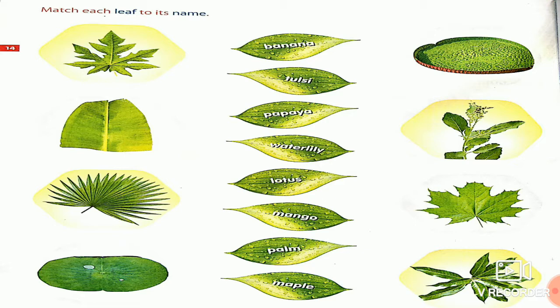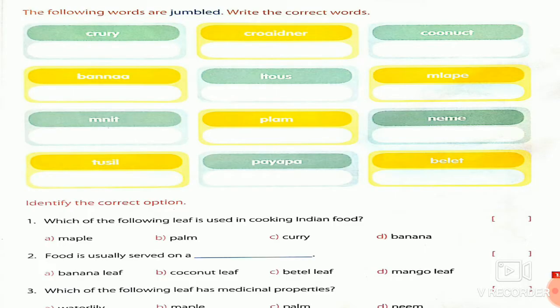The first activity on page 14 is: match each leaf to its name. The leaf names are given in the center, and leaf pictures are given on both sides. You just match the picture to the correct name.